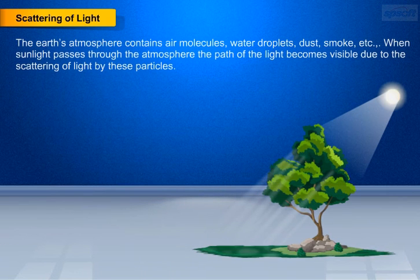The earth's atmosphere contains air molecules, water droplets, dust, and smoke. When sunlight passes through the atmosphere, the path of the light becomes visible due to the scattering of light by these particles.